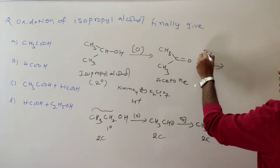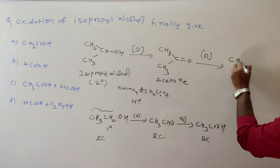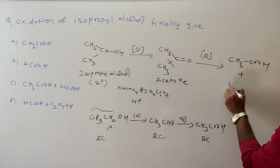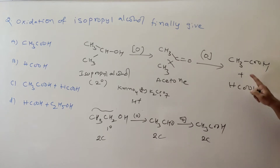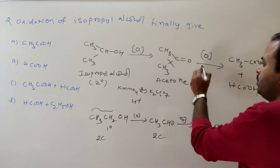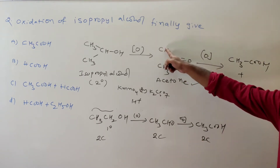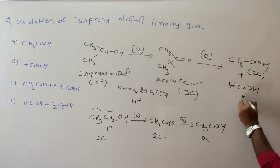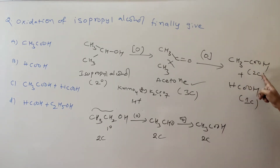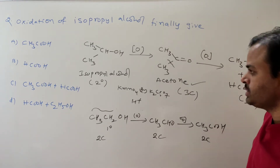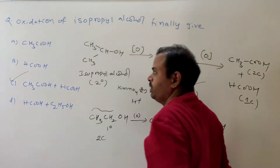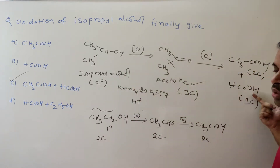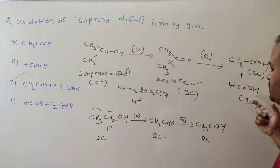This acetone undergoes oxidation under similar conditions. What does it give? CH3COOH plus HCOOH — acetic acid and formic acid are both formed by the oxidation of acetone. The 3-carbon ketone breaks: one part has 2 carbons (acetic acid) and one part has 1 carbon (formic acid). So the answer is C.